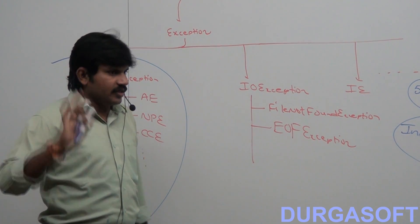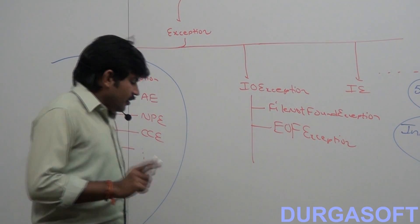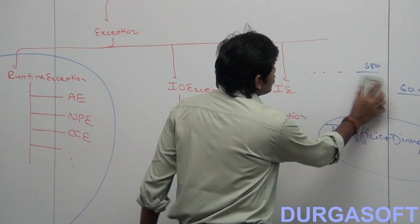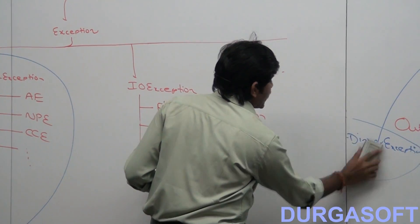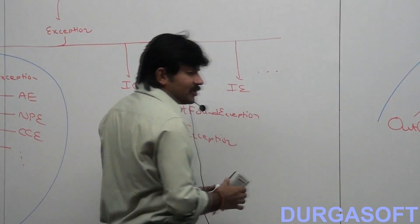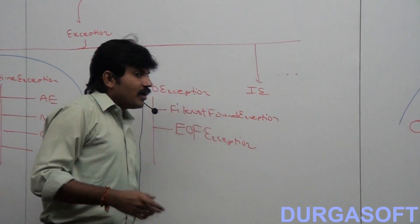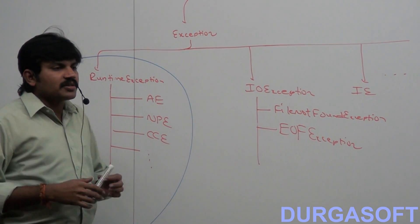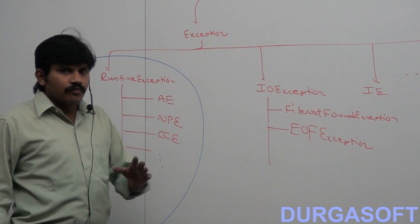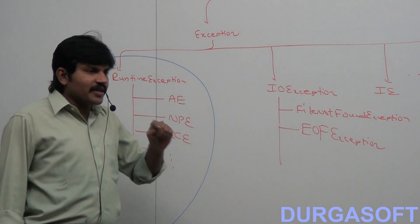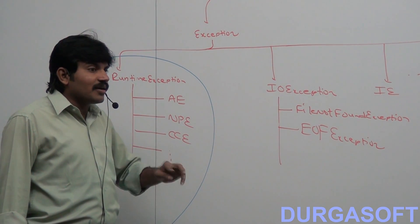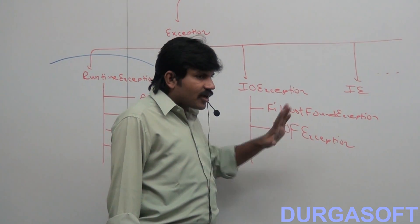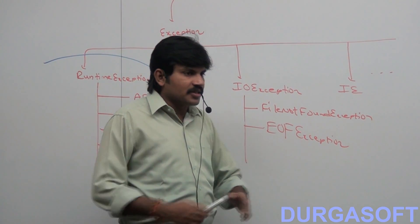Now the terminology is very clear. In checked exceptions, there is another small division. Partially checked and fully checked — some checked exceptions are called fully checked, and some checked exceptions are called partially checked. What is the difference between partially checked and fully checked exceptions?